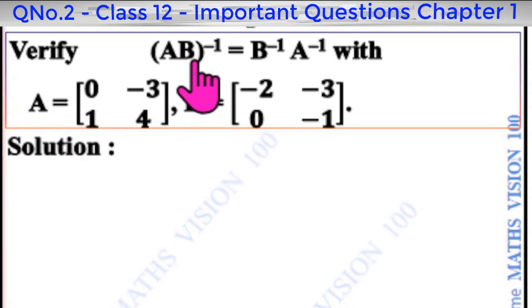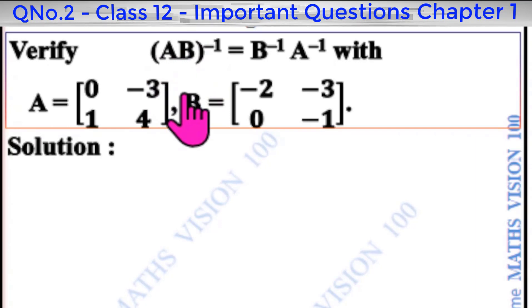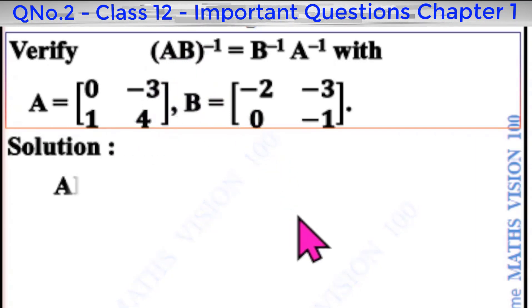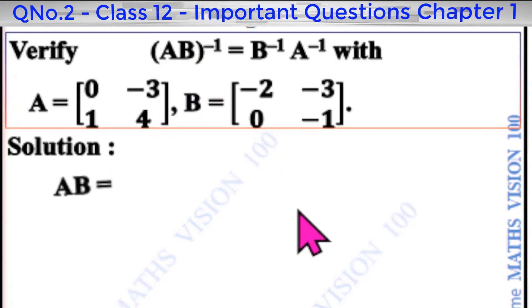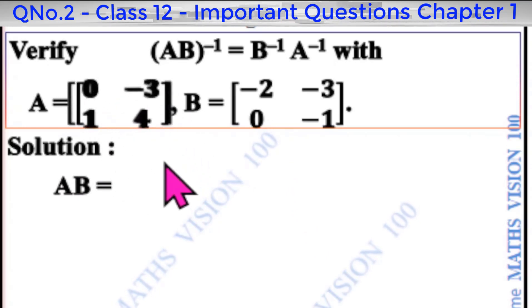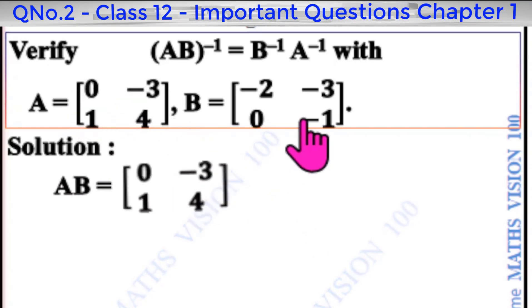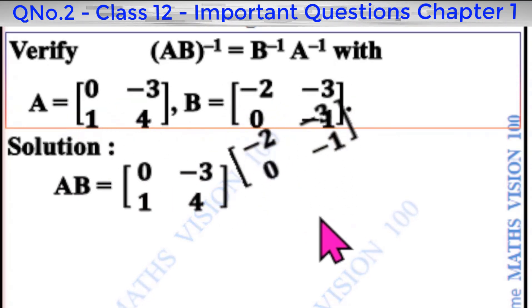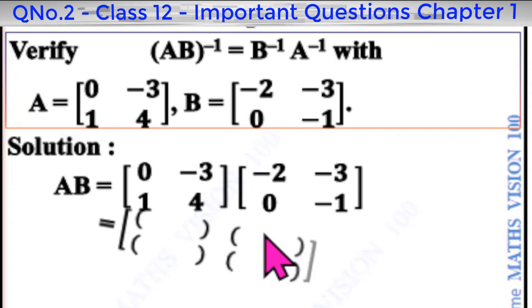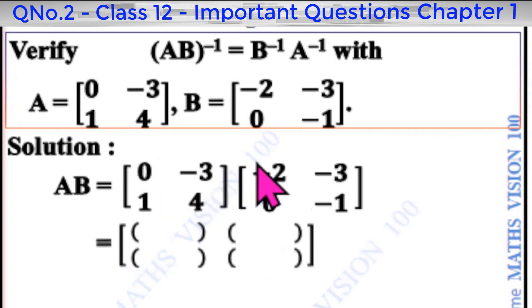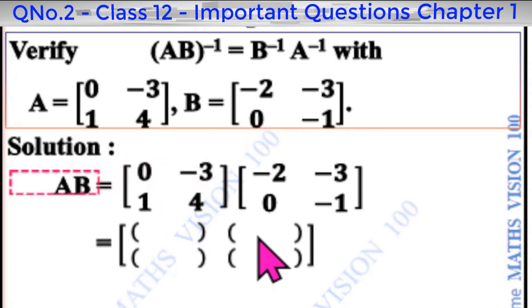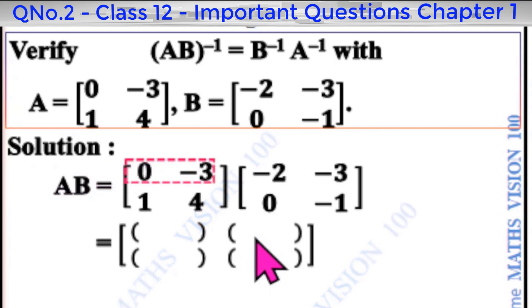If we look at AB, AB is equal to first matrix into second matrix. We will see the first row, first column multiplication.